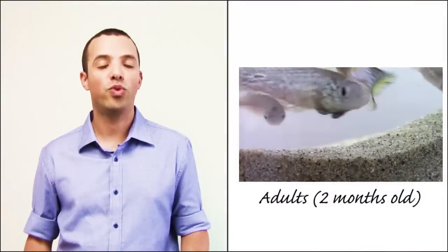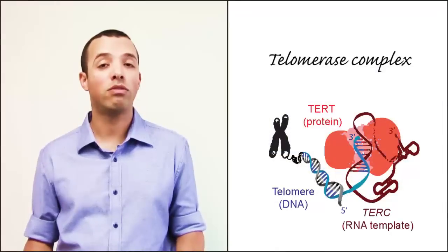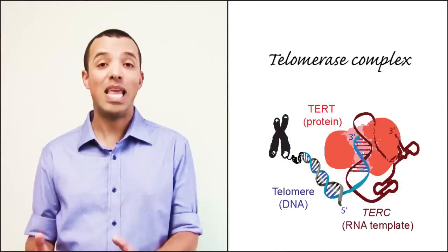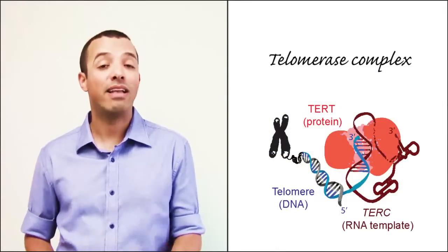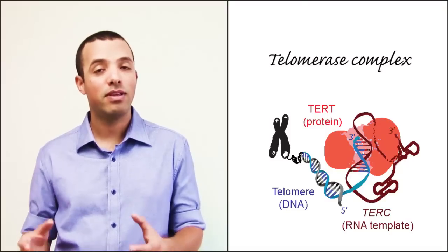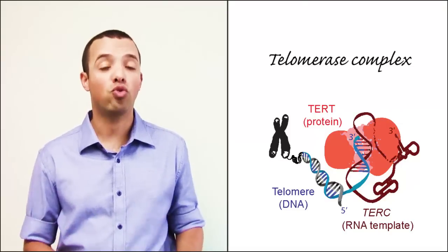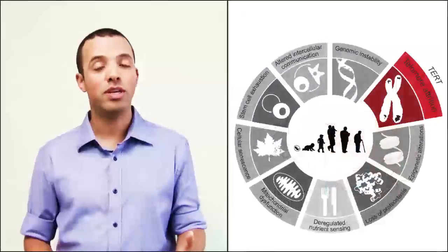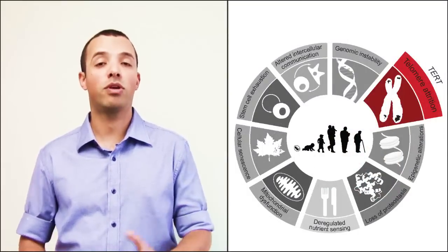As a proof of principle, we decided to target an enzyme called telomerase, which stabilizes telomeres or the ends of chromosomes. With each cell division, these telomeres become very short, and telomere attrition is considered one of the hallmarks of aging.